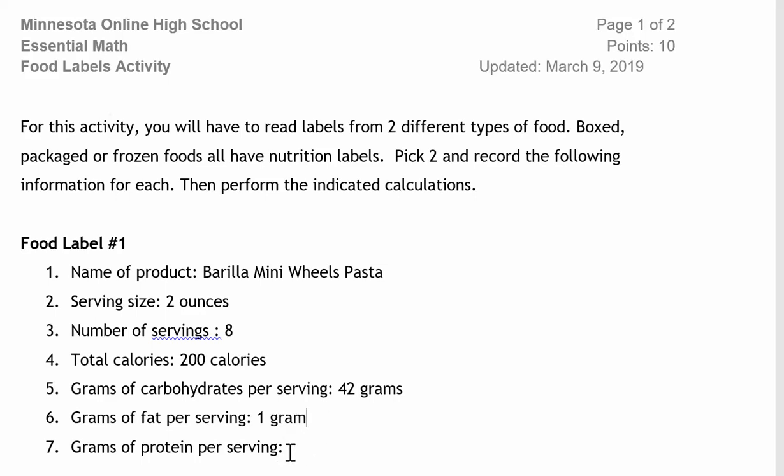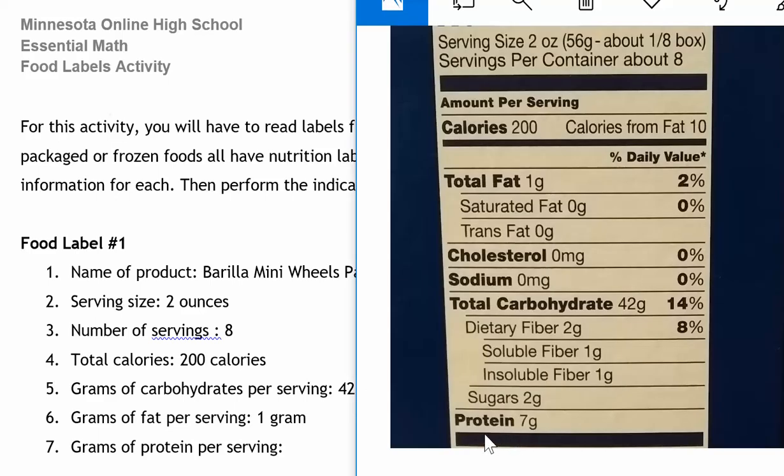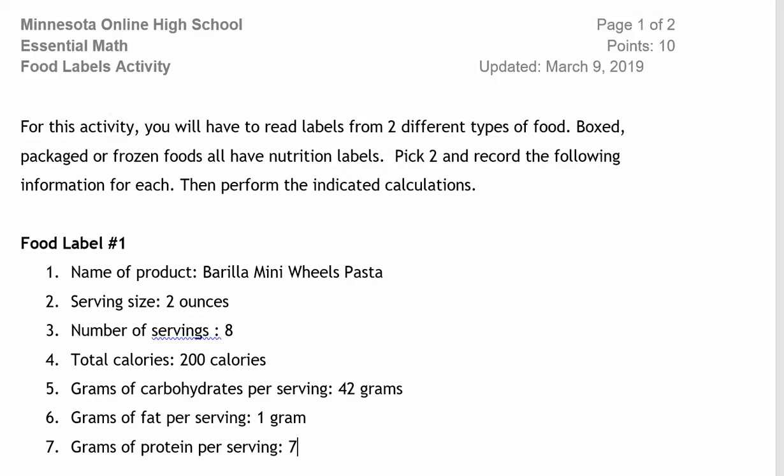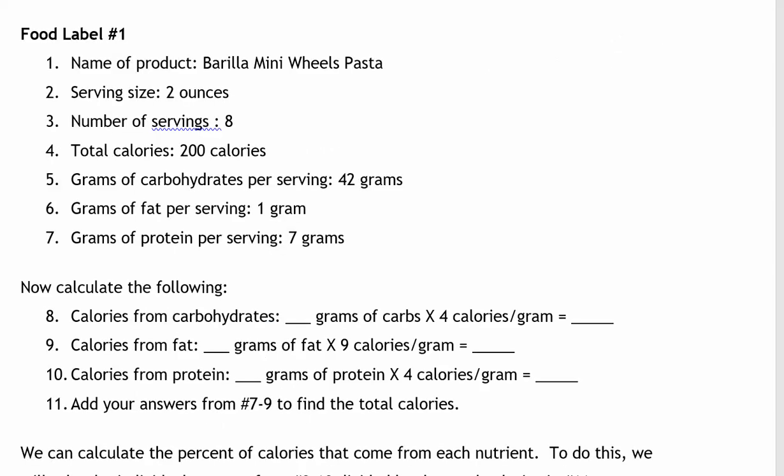And then the final one from the label we need is grams of protein. So protein is usually the bottom one. So protein is seven grams. For the next part of the assignment, we're done reading the labels. Now we'll do our calculations. So all the information we need, we've recorded in one through seven above.